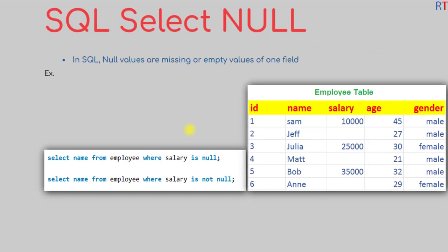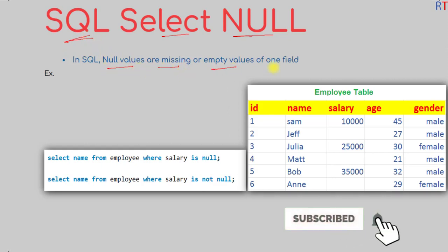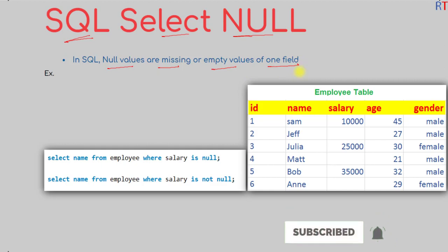In this video we're going to talk about the SELECT NULL statement in Structured Query Language. NULL values are the missing or empty value of a field. For example, in the employee table, inside the salary field we may have some empty or missing values — these are NULL values.